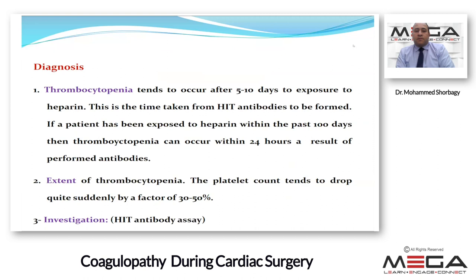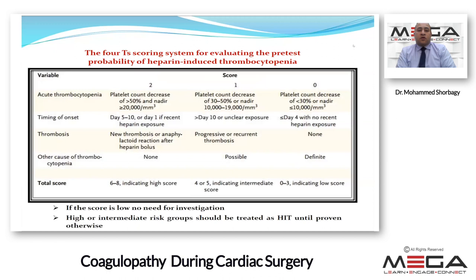Diagnosis involves confirming thrombocytopenia with a drop in platelet count by 30 to 50 percent, and HIT antibody assay. The 4T scoring system evaluates pretest probability based on: degree of thrombocytopenia, timing of onset, presence of thrombosis, and other causes of thrombocytopenia. If the score is low, no investigation is needed; high or intermediate risk groups should be treated as HIT until proven otherwise.